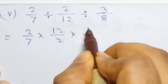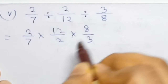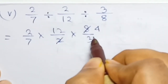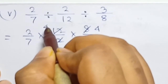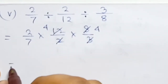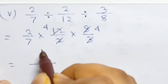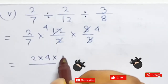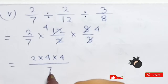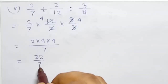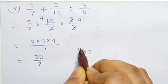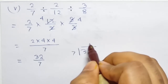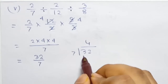Answer: denominator then numerator — 1. Two by seven into twelve by two into three by three. Eight by three: two fours are eight. Three fours are twelve. So finally our value is three — two into four into four divided by seven is thirty two by seven. Next, thirty-two divided by seven: seven fours are twenty-eight.